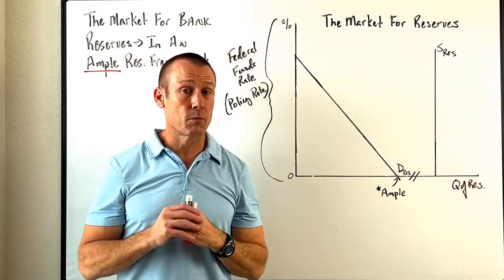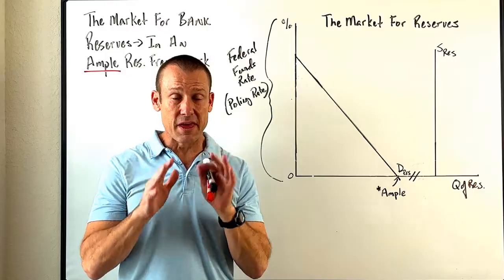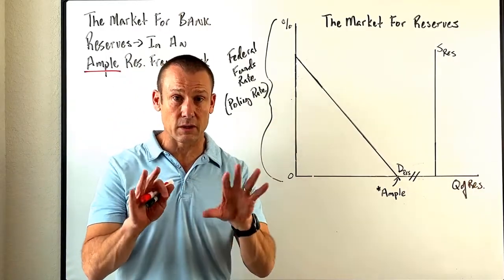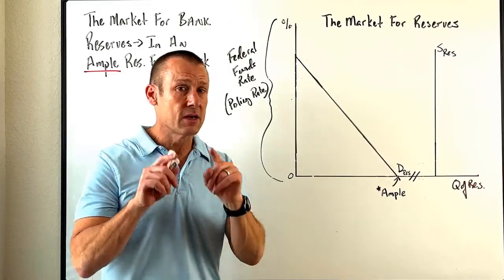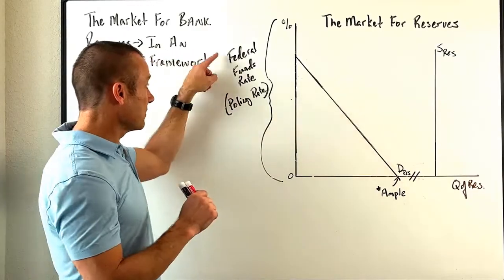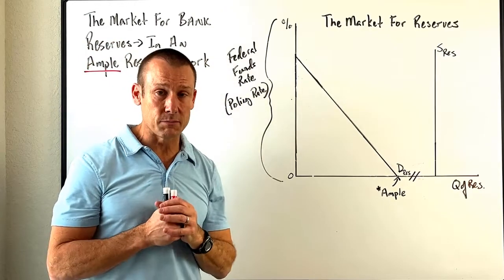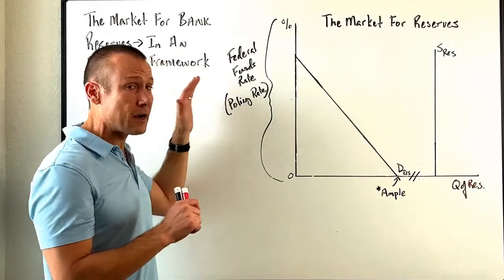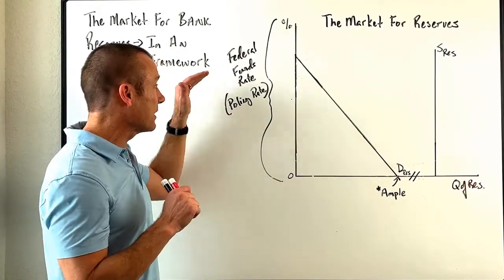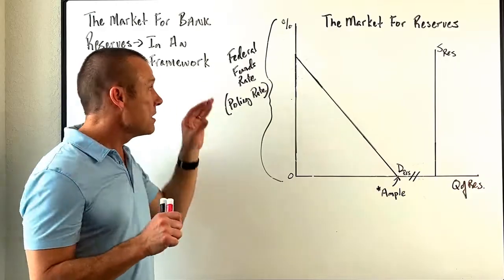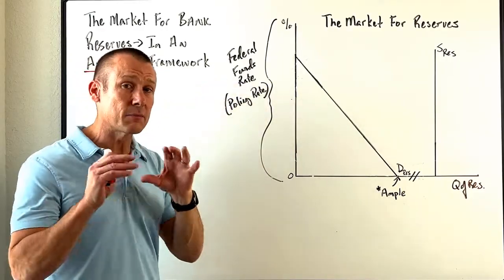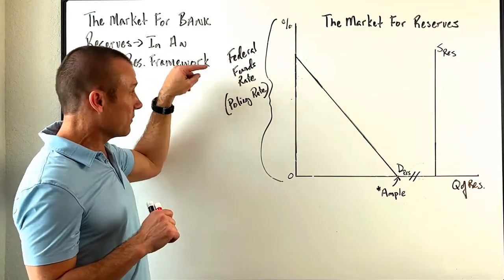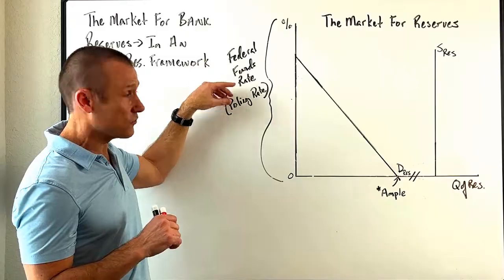When they bought those assets, they credited the reserve balances of commercial banks at the Fed, and those reserve balances went way up. Reserves were no longer limited anymore — they were ample. Now, the policy rate of the Fed is the federal funds rate. This is a targeted rate, meaning they do not directly control it; it is not an administered rate.